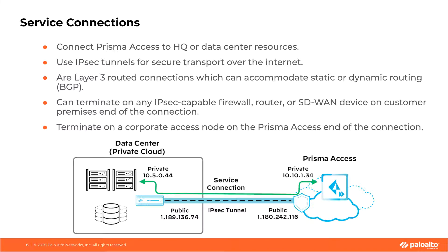Service connections are the glue that hold everything together. They connect Prisma Access to your headquarters or data center resources, leveraging IPsec tunnels for secure transport over the internet. These are Layer 3 routed connections which can accommodate static or dynamic routing and can terminate on any IPsec-capable firewall, router, or SD-WAN device on your premises. They terminate on a corporate access node on the Prisma Access end. The key difference between a remote network and a service connection is that remote networks support outbound and inbound connectivity, whereas service connections are inbound only — you cannot route traffic out to the internet through a service connection.